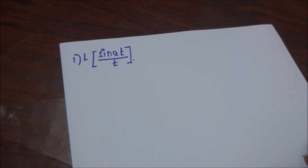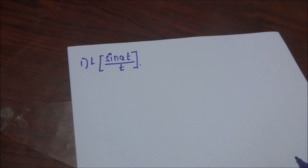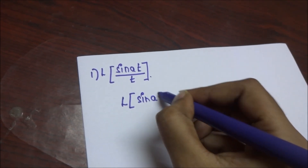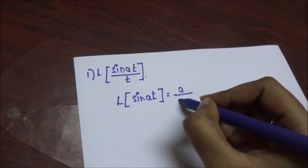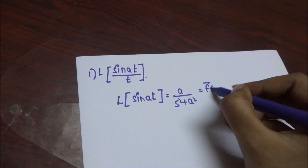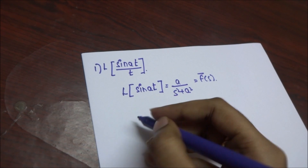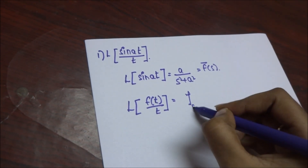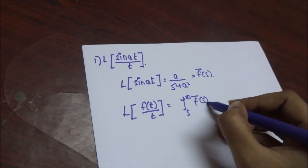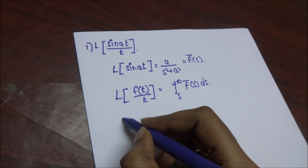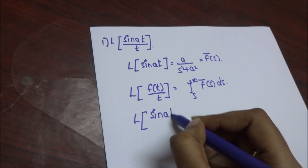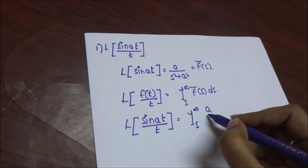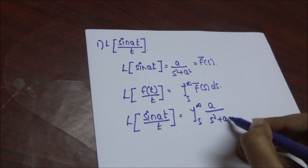Here is the first problem on division by t of Laplace transform. The given problem is Laplace of sin(at)/t. The formula of Laplace of sin(at) is a/(s² + a²), which equals F̄(s). Applying the division by t formula, Laplace of sin(at)/t is equal to the integral from s to infinity of a/(s² + a²) ds.